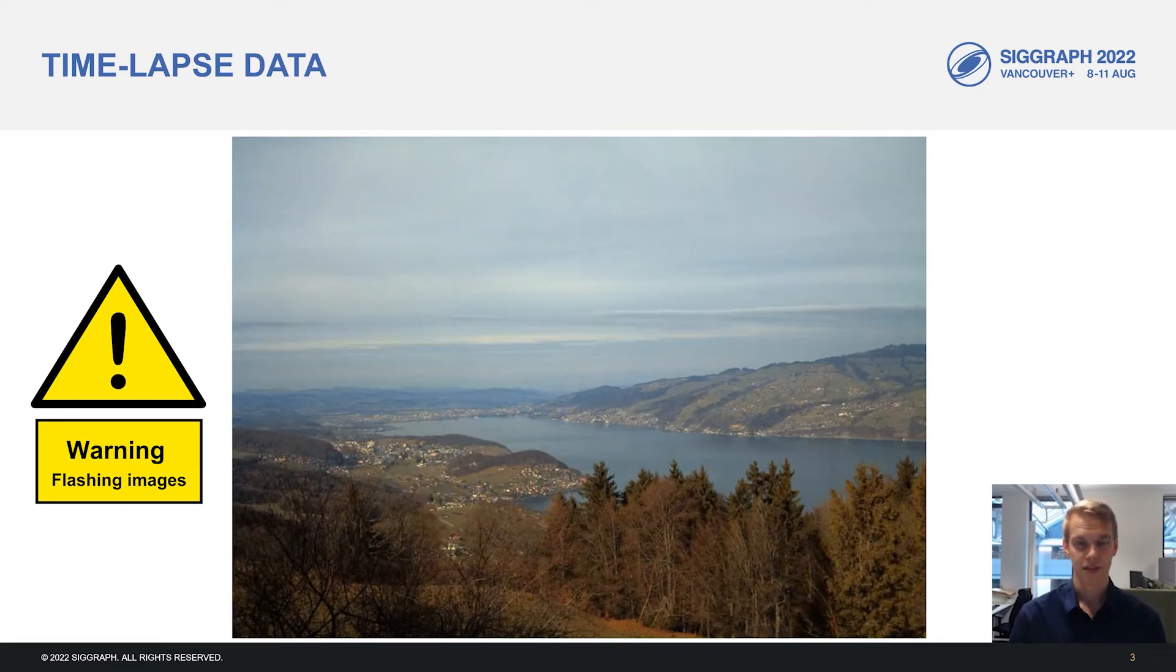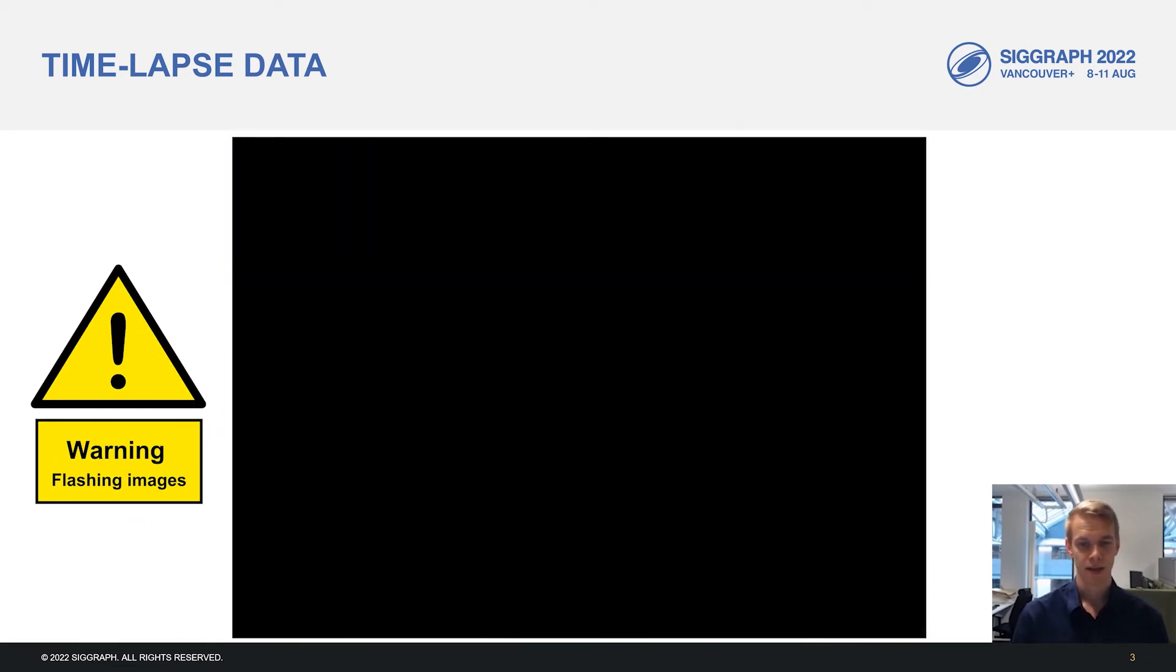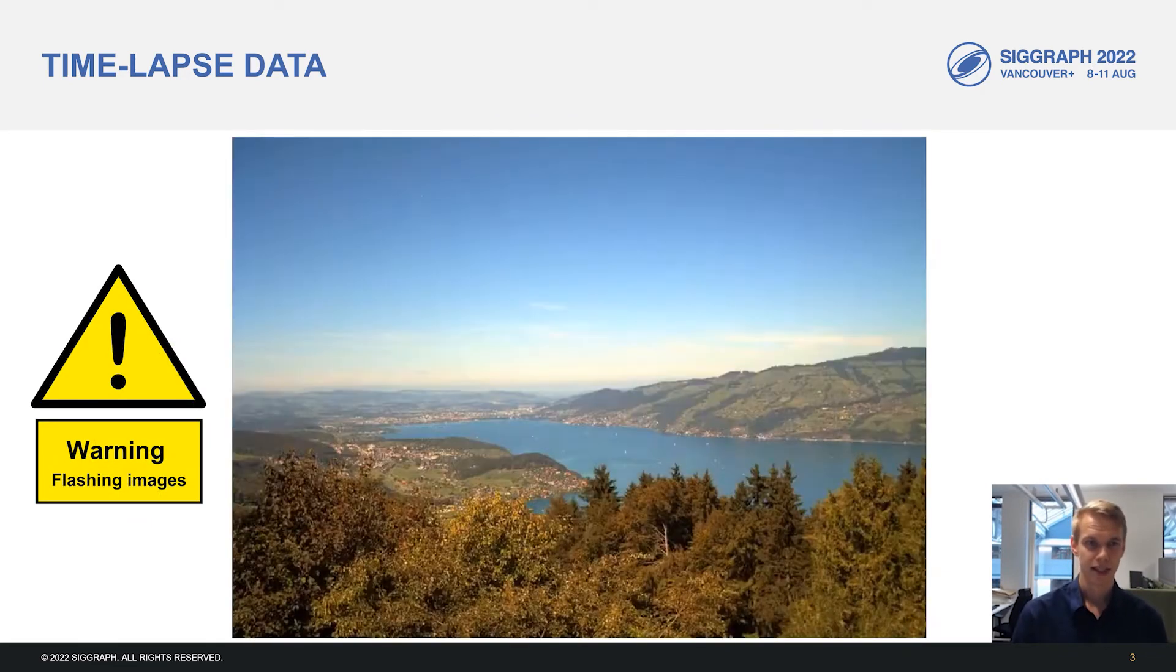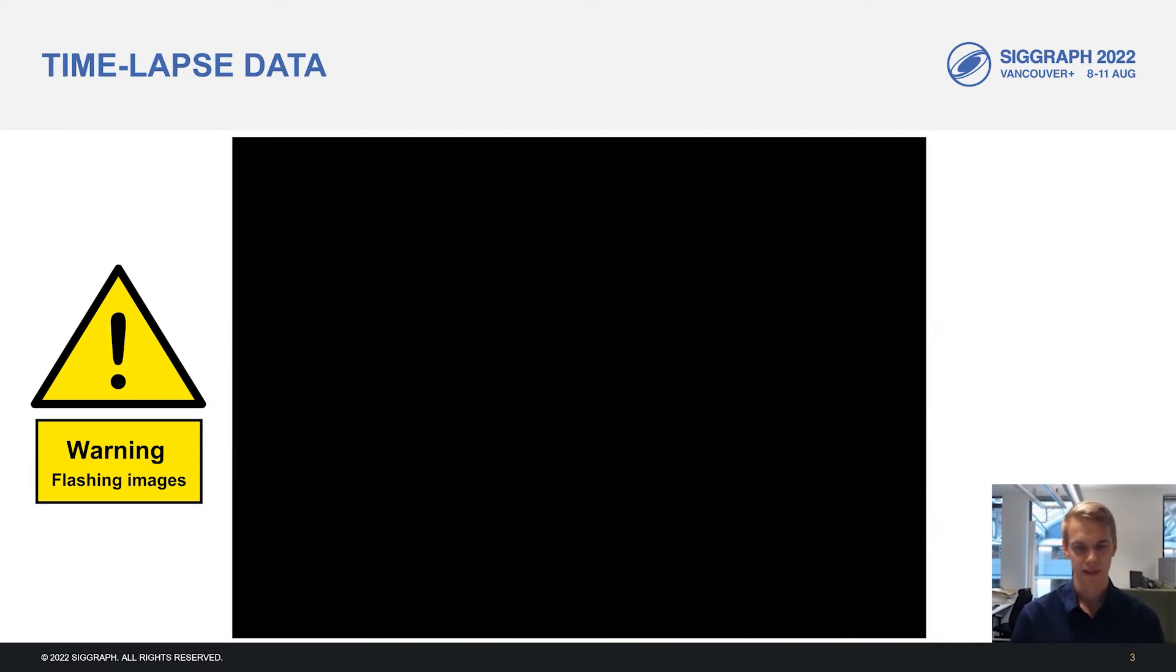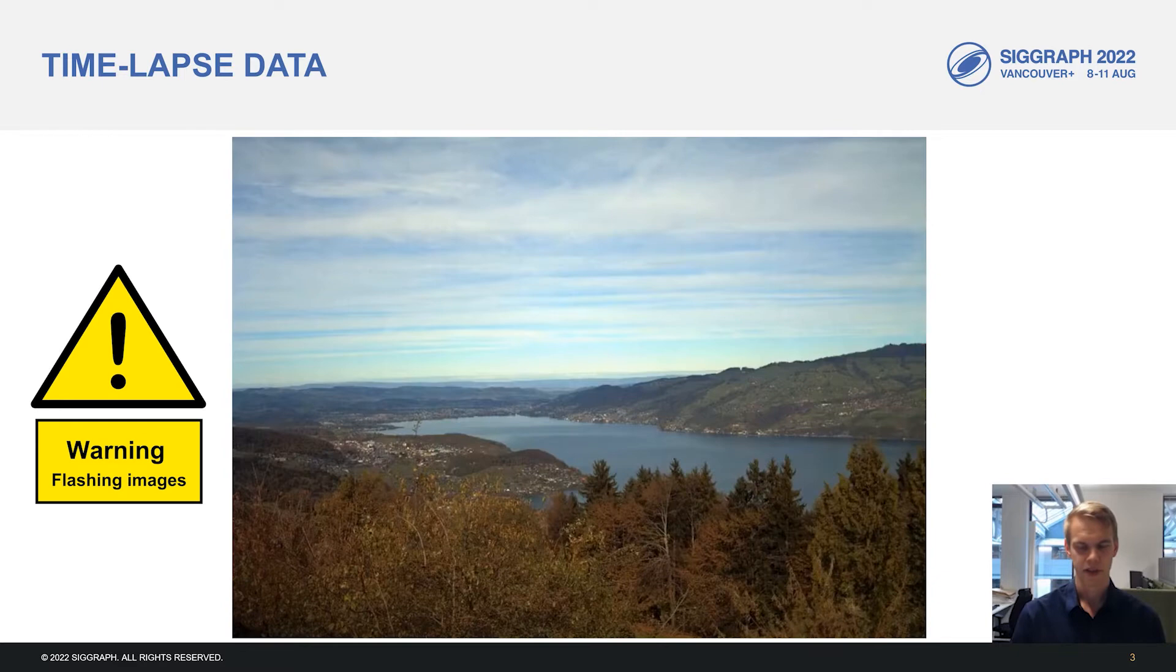Beware, there are some flashing images ahead. As we can see, naive subsampling results in quite a messy result with lots of flickering in the video. This is because we have lots of entangled changes where the day cycle, year cycle and random weather all keep changing at the same time.